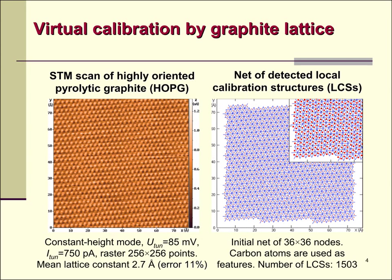The left side of the slide shows an STM image of the atomic surface of highly oriented pyrolytic graphite used as a length standard. The image is distorted by thermal drift and creep, which causes an 11% mean relative error of measurement of the crystal lattice constant. On the right, shown is a net of local calibration structures detected during the virtue of distributed calibration.